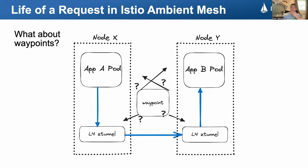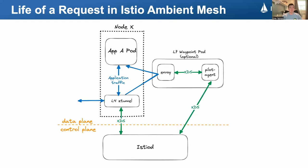But wait. Dan and I mentioned there are two new components — what about the waypoints? Let's refer back to our original diagram. So, it's a trick question. Those other diagrams were technically correct. Waypoints are entirely optional in Ambient. If you as a user just want mutual TLS between services in the mesh and don't care about Layer 7 mesh features such as virtual service routing, Layer 7 telemetry, and Layer 7 authorization policies, then that's all there is to it.